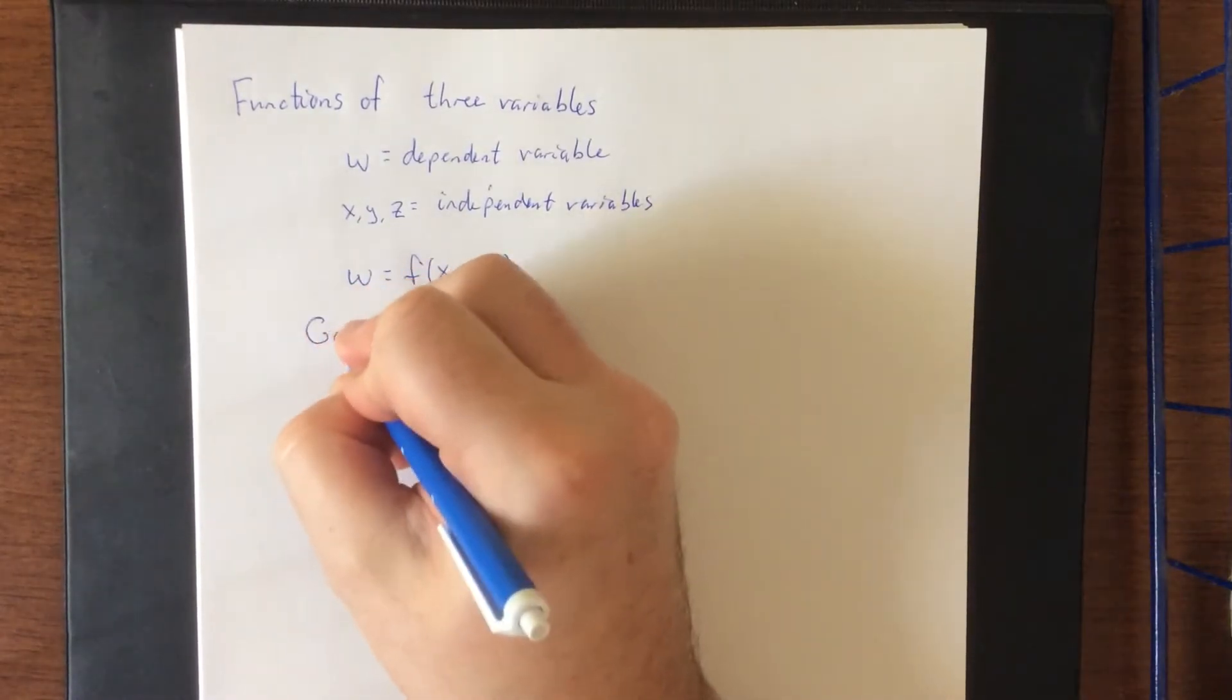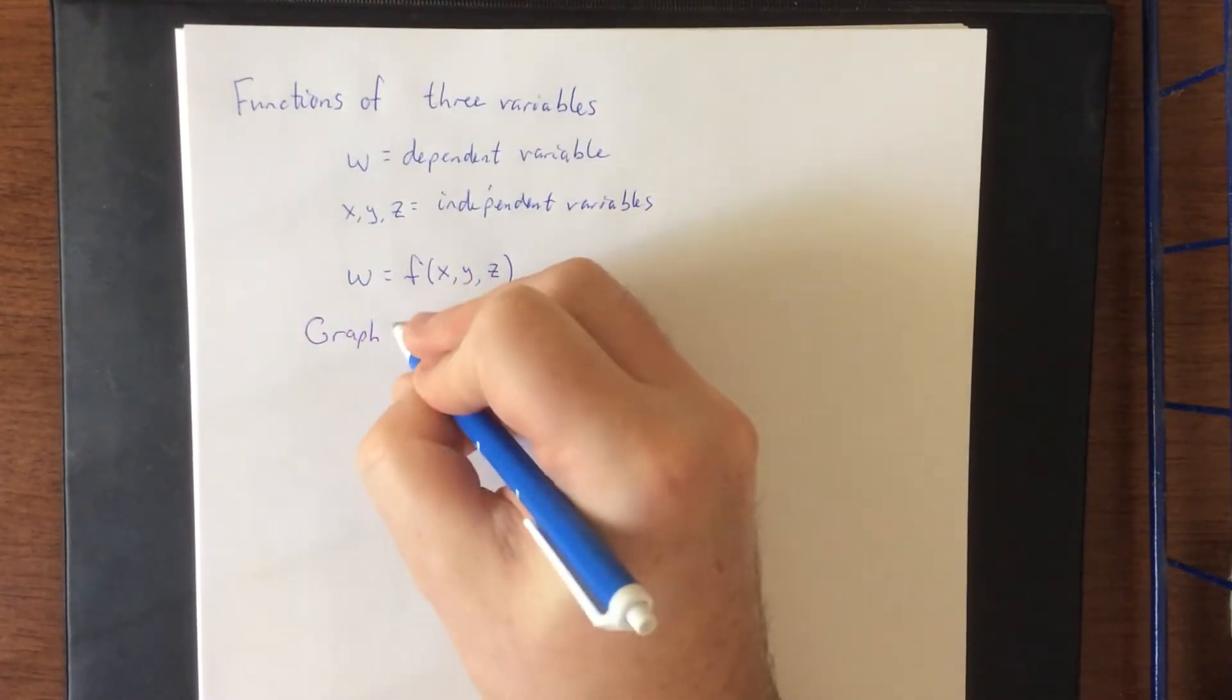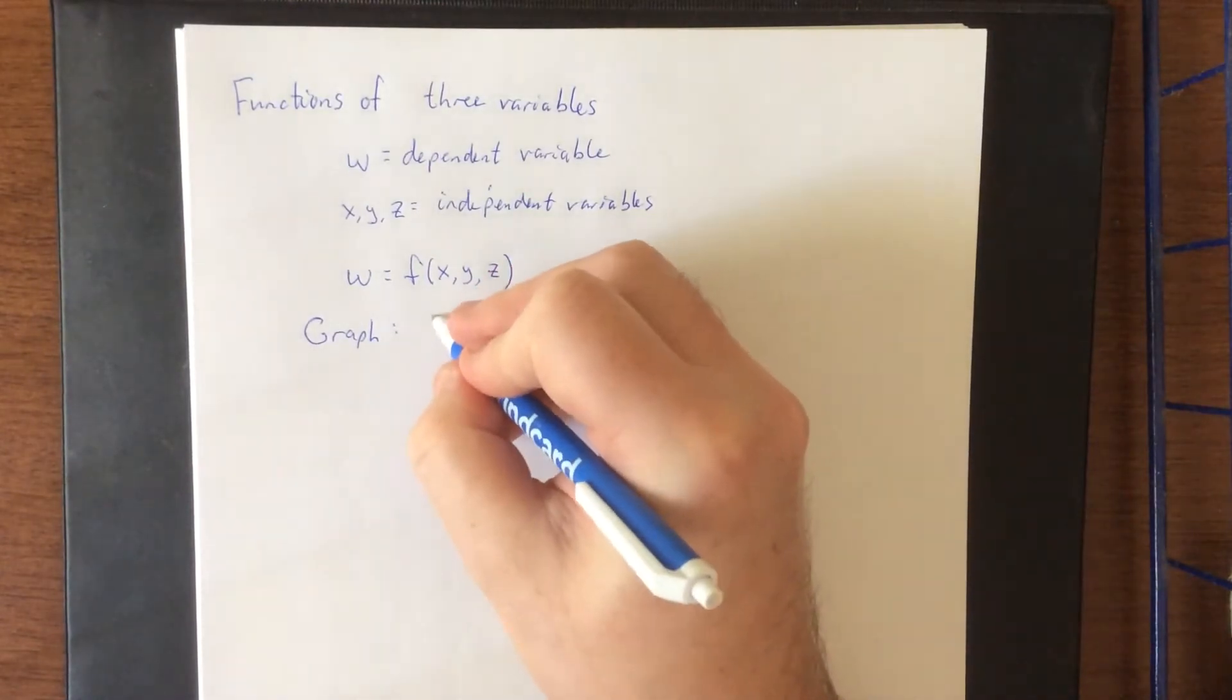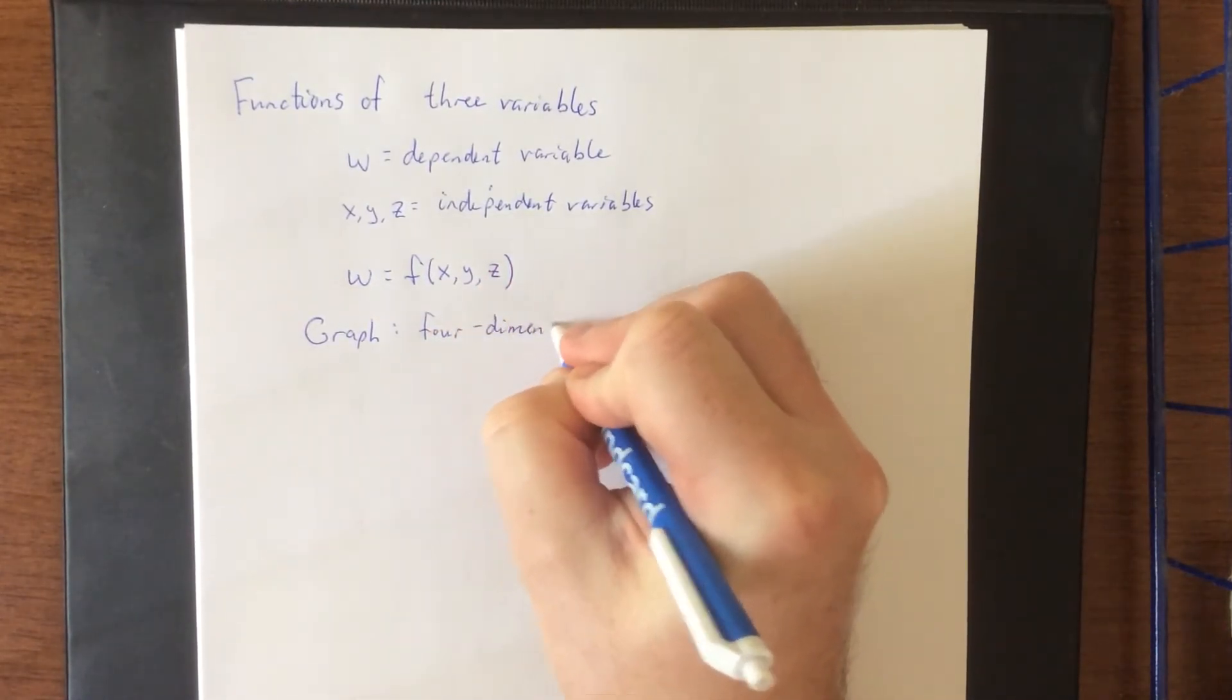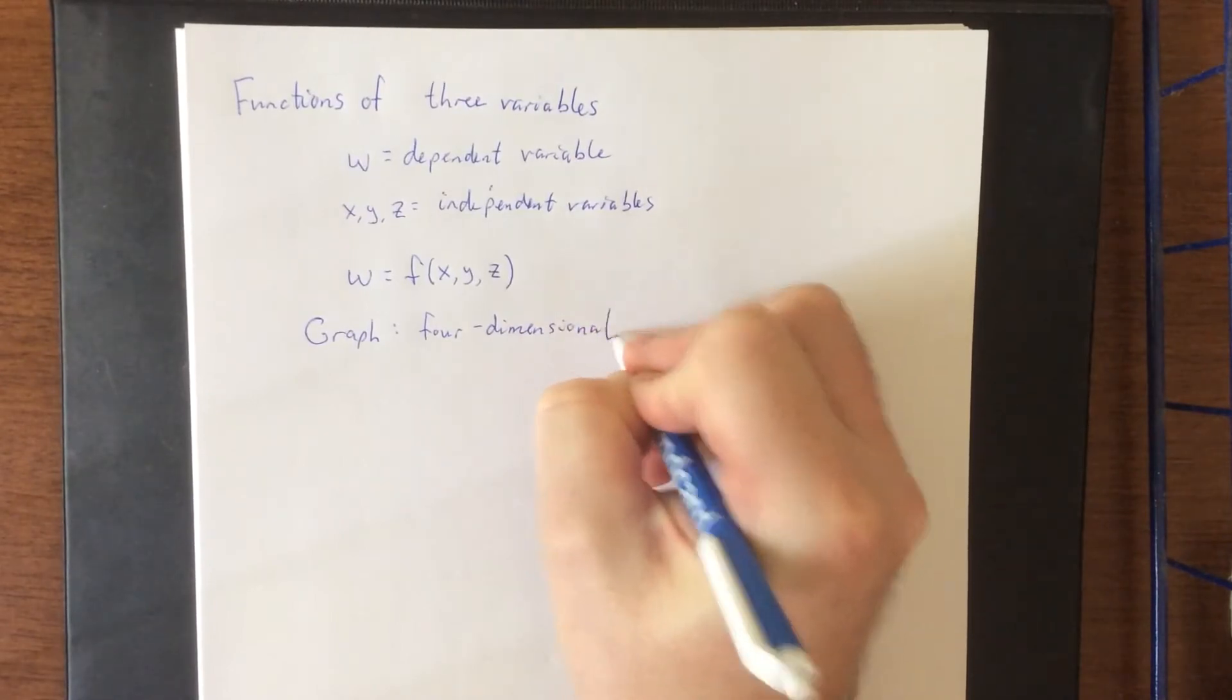If we wanted to consider the graph of a function of three variables, this would be something that is four-dimensional. Four-dimensional doesn't really give us any sort of opportunity to determine what a graph like that looks like with our three-dimensional brains and our three-dimensional eyeballs.